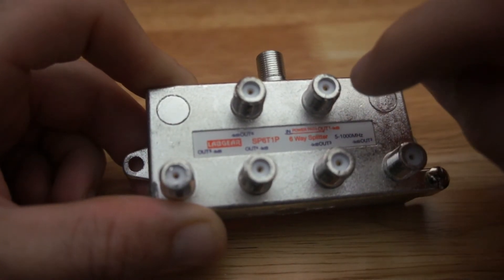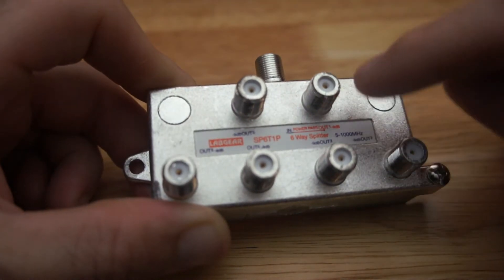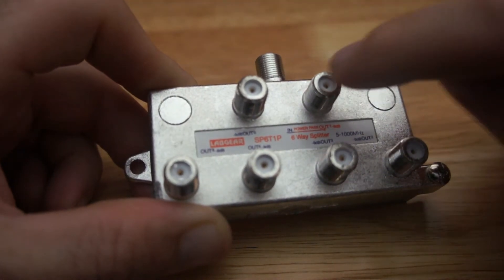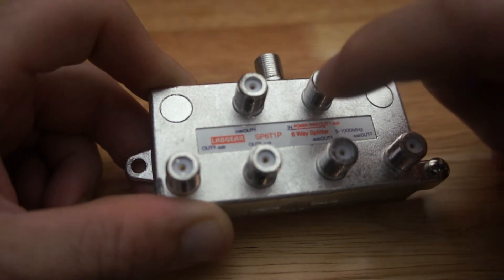This one right here that I've got my finger on. That's then telling me that if you have a masthead amplifier, a booster in the mix, and you're using this six-way splitter, the power pack for your booster must be connected to the TV point that is connected to this output, called the power pass.